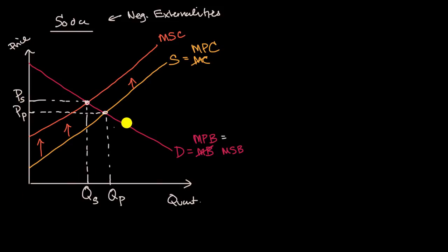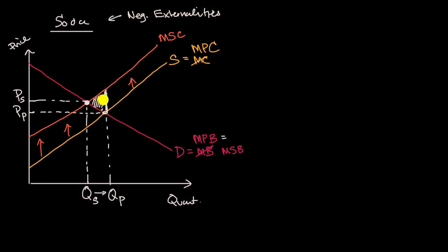But if you just let the private markets happen as they are, you're overproducing from a societal point of view. You produce all this quantity where the marginal social cost is higher than the marginal social benefit, and all of this is going to take away from society's total surplus. So this is going to create deadweight loss, because these quantities are different.